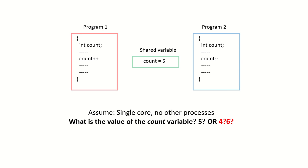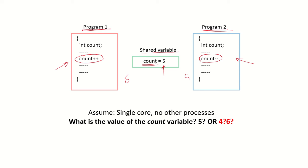Both the producer and consumer processes use a shared variable count. The producer increments it and the consumer decrements it. If count is initialized at 5, in one cycle the producer increments it to 6 and then the consumer decrements it back to 5. So the final value should be 5, but we will see that depending on how instructions are executed, the value could end up as 4 or 6.